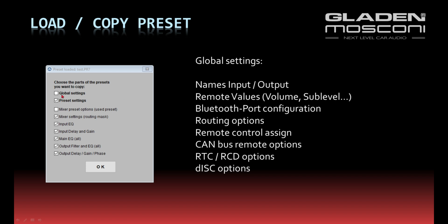First, you can choose the global settings. The global settings include the names of the inputs and outputs, the remote values like volume, sublevel, balance, fader, bass, treble, and so on. They also include the configuration of the Bluetooth port, if a BT Plus module or an analog extension module is installed, and the overall routing options, output channels, and remote control assignments.